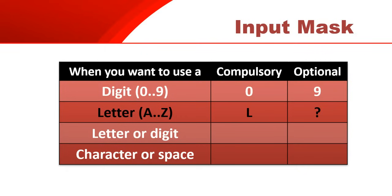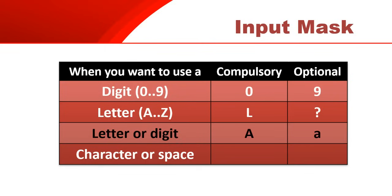If it could be a letter or a digit in that particular place - it could be an A or it could be 3 - then if it's compulsory we use the capital A. But if it could be blank as well, we use a small a as the optional letter-or-digit code.